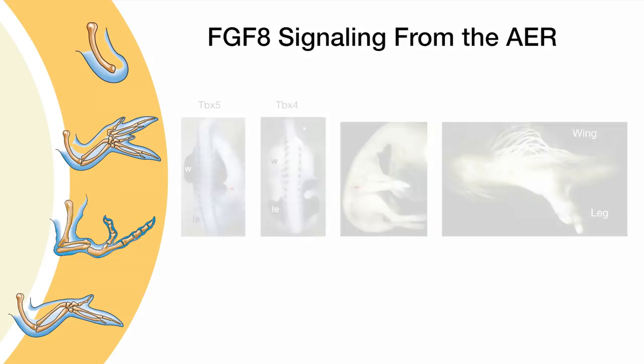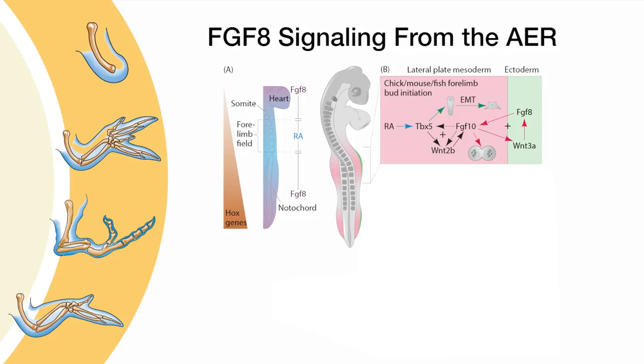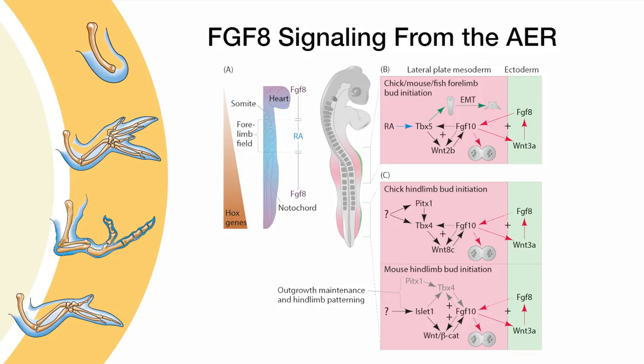To summarize: limb bud initiation and outgrowth of the forelimb field is determined by the highest concentration of axial retinoic acid, which induces TBX5 expression and forelimb specification. TBX4 or islet 1 are required for hind limb field determination. However, FGF10 ultimately drives proliferation of the progress zone for both limb fields. FGF8 in the AER is critical for the sustained outgrowth of the limb bud through the establishment of a positive feedback loop of signaling between FGF10, FGF8, and Wnt3a.